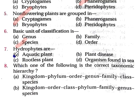Question number 7: Hydrophytes are — Option A: Aquatic plants, Option B: Plant disease, Option C: Rootless plants, Option D: Organisms found in the sea.